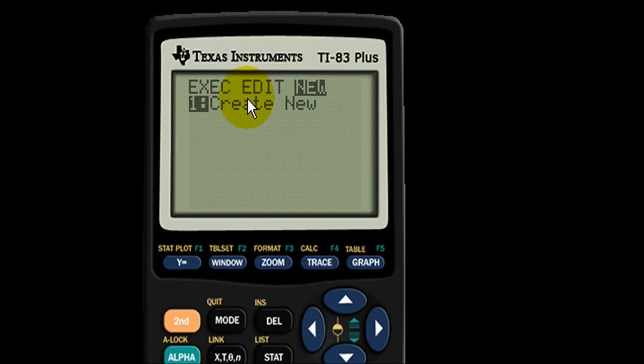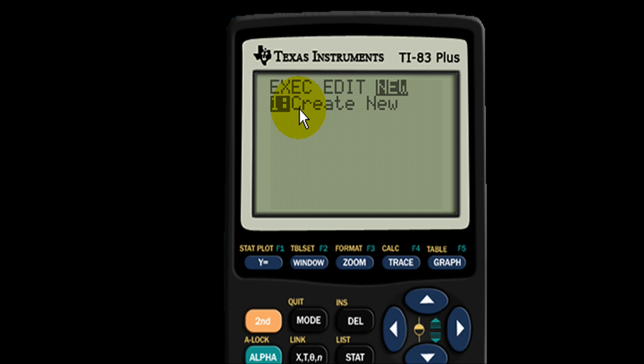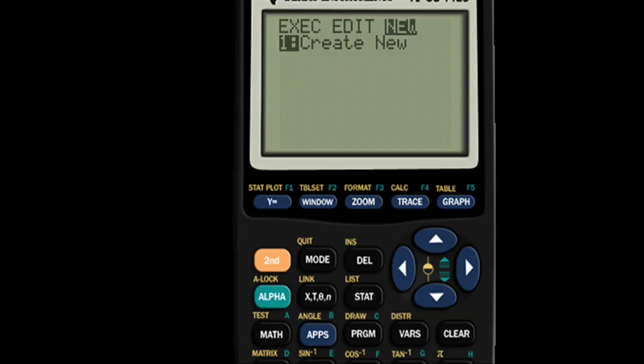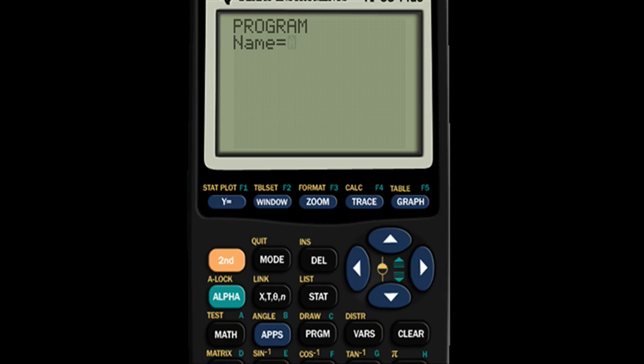The only thing on the list is create new with the number one next to it. So we're going to hit the number one by clicking number one on your calculator or hitting enter. I like numerical values so I'm just going to hit one and so we have this screen.